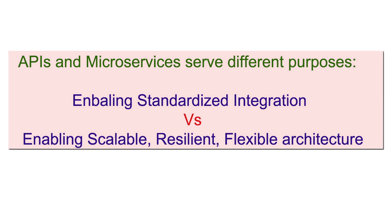On the other side, when we talk about microservices, microservices are based on an architecture which enables scalable, resilient, and flexible architecture. Whenever you are implementing your application, you have a choice: you can create one monolithic fat application, or you can break down your application into smaller, fine-grained, scalable, resilient services which follow service-oriented architecture basic principles. In this way, you are totally segregating your individual services, and then on top of that you have APIs which are going to expose those services.